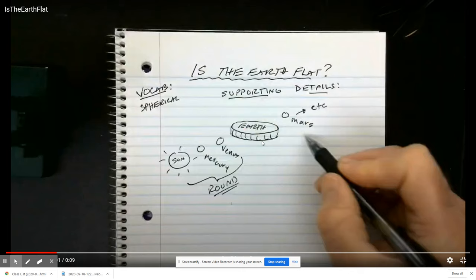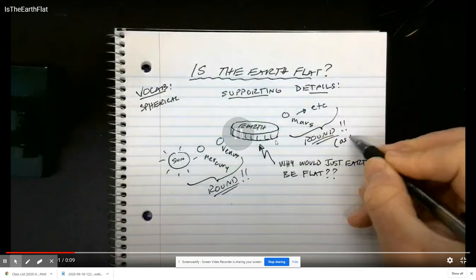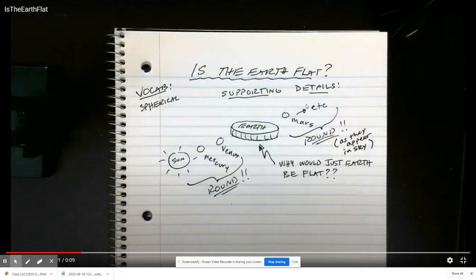In this situation, Neil deGrasse Tyson has pointed out that if the Earth were flat, why is it that all of the rest of the bodies of the solar system appear round to us as they're viewed in the sky, as they're viewed through a telescope? That just doesn't make sense. So this is one of the supporting details—it's an important diagram. We put a version of it in here. Stick figures are fine; clear and simple is better.